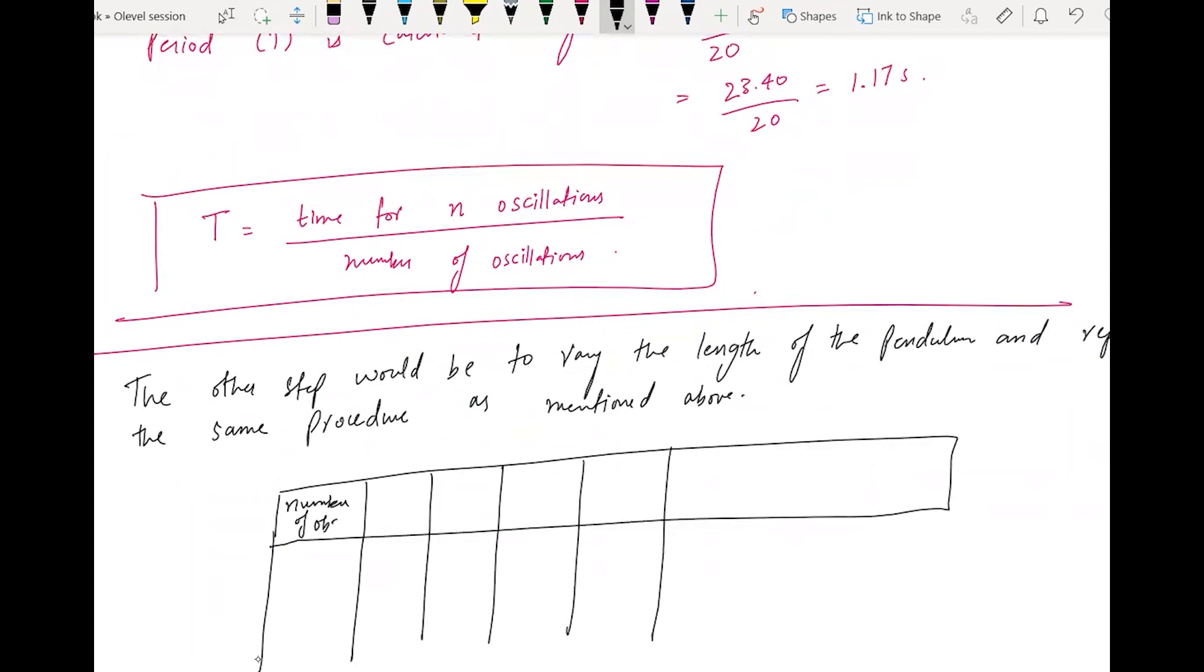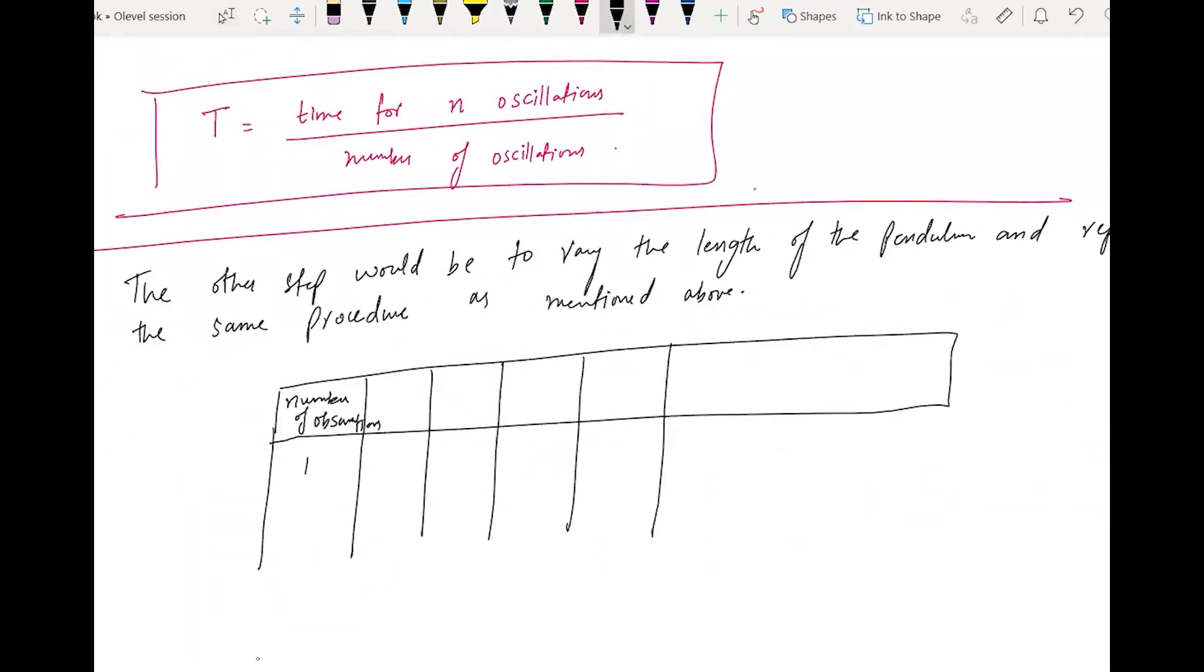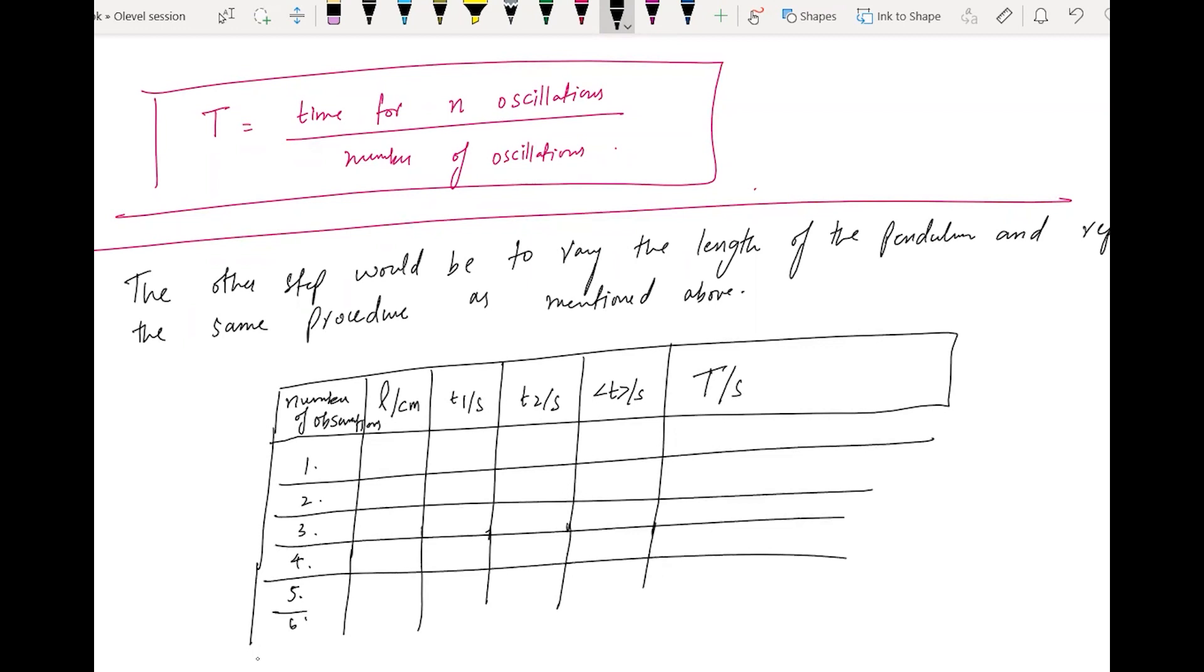You have number of observations - you're taking six readings: 1, 2, 3, 4, 5, and 6. You have to take six readings. Then you vary the length. Then you have T1 seconds, you have T2 seconds, then you have T average, and then you have capital T. In some cases it asks you to tabulate T squared.